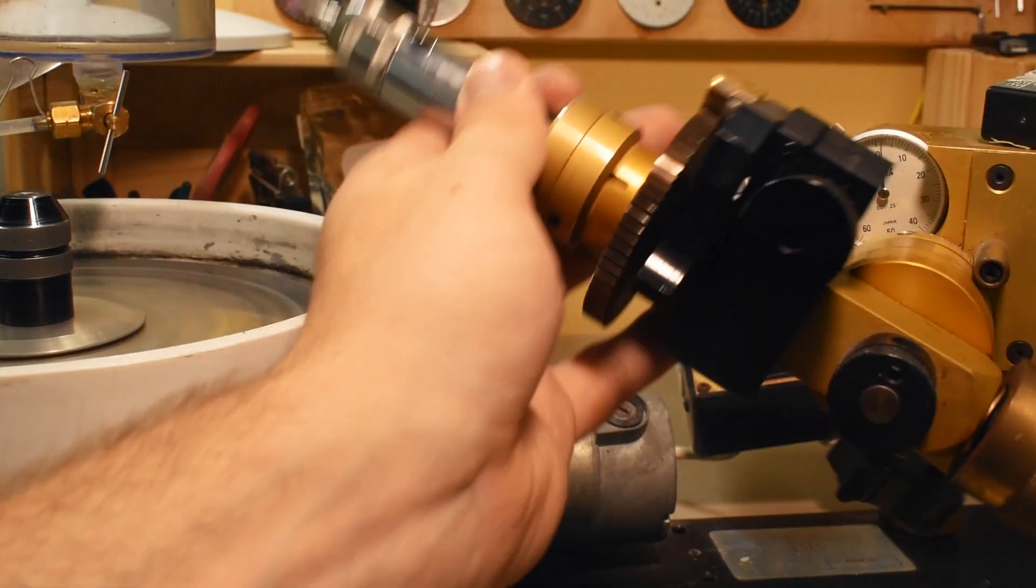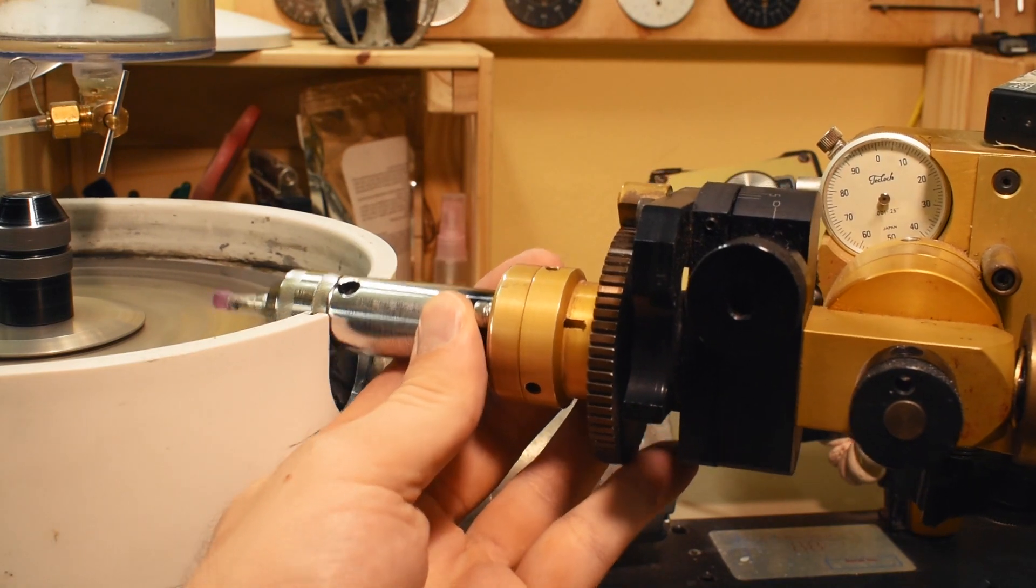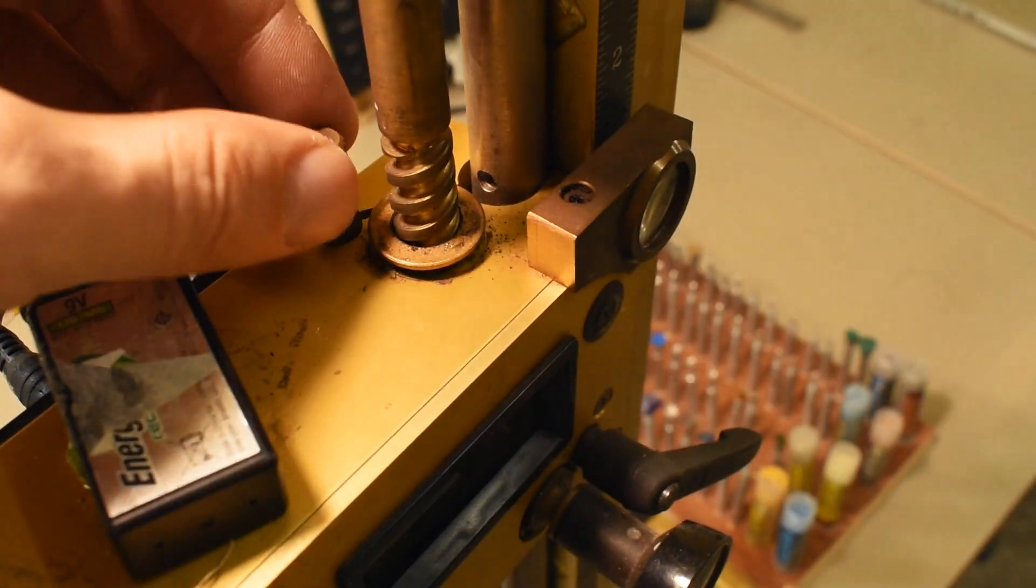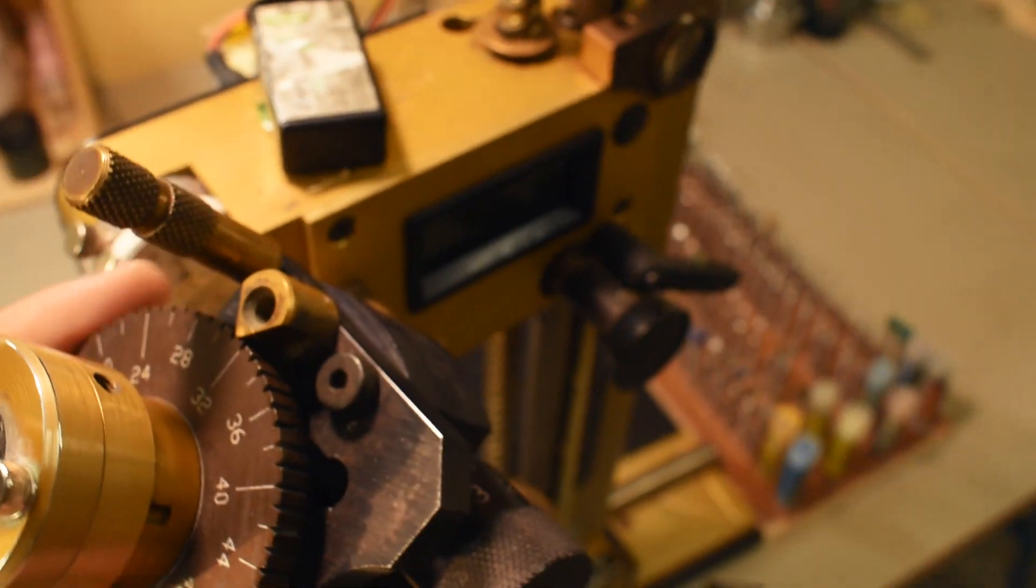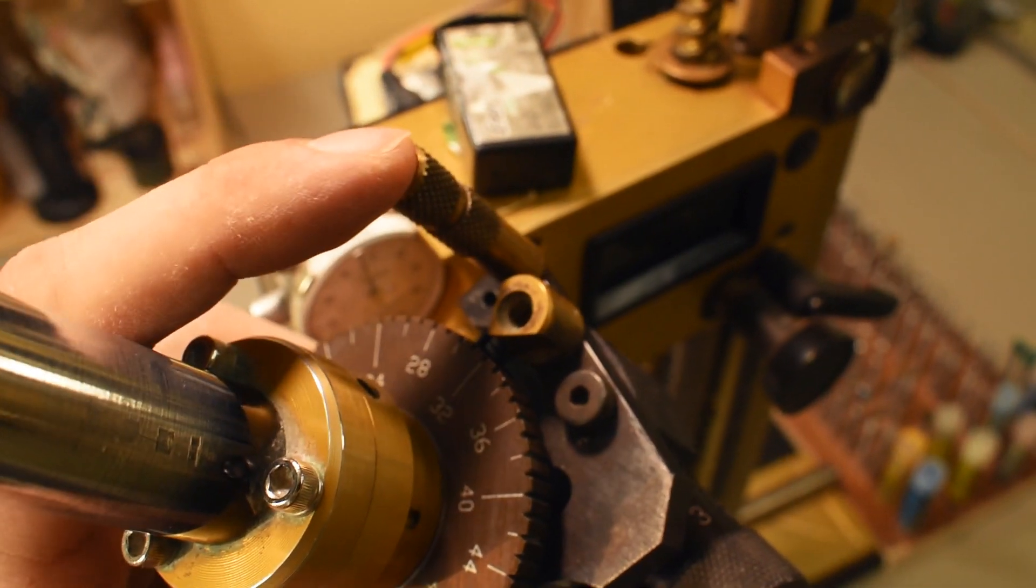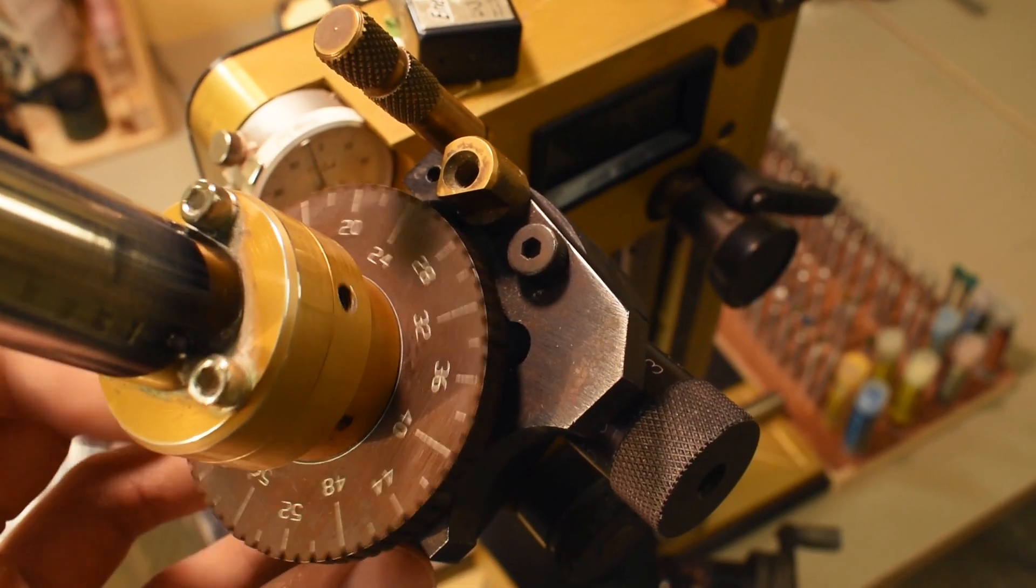When you need to cut your girdle, simply remove the water guard and set your machine to 90 degrees. To quickly spin a girdle or a pavilion, you can put this lock pin into the hole, and then the index wheel can spin freely.